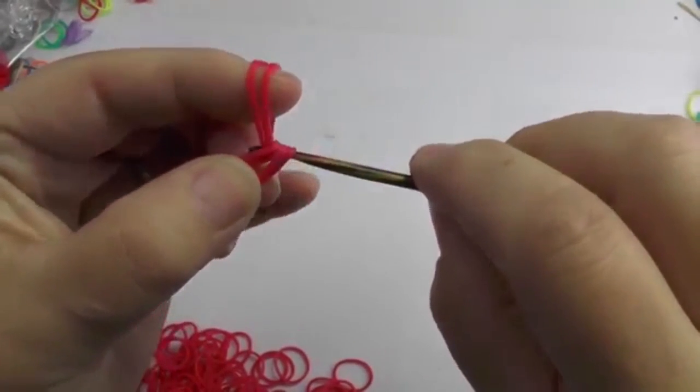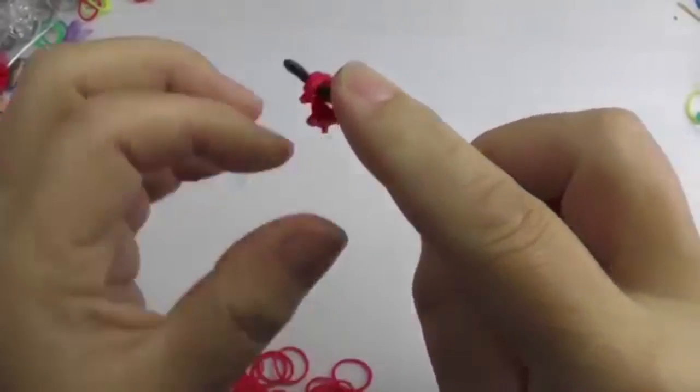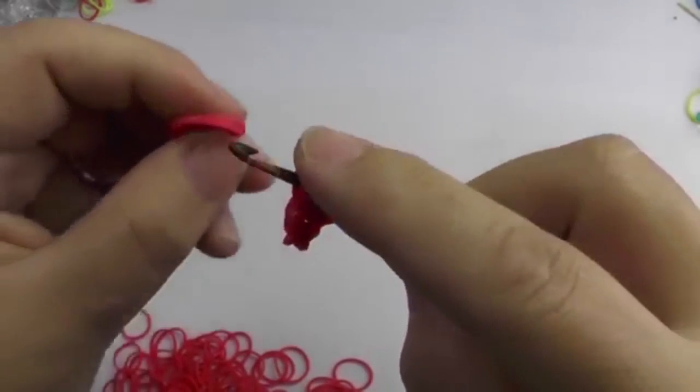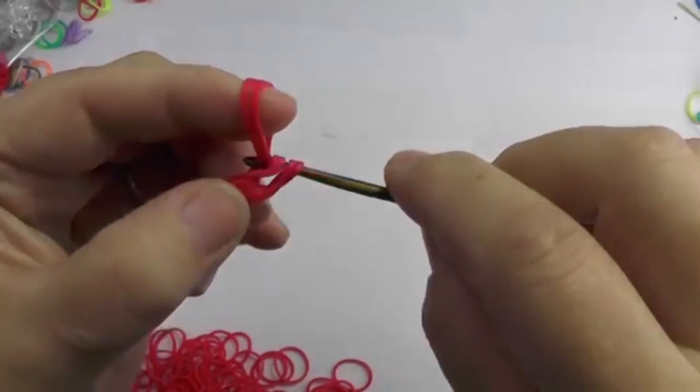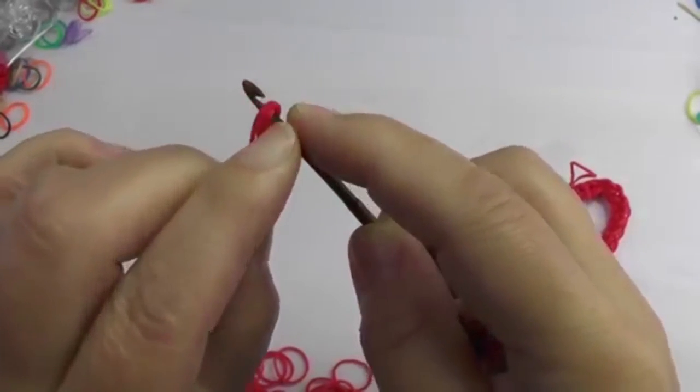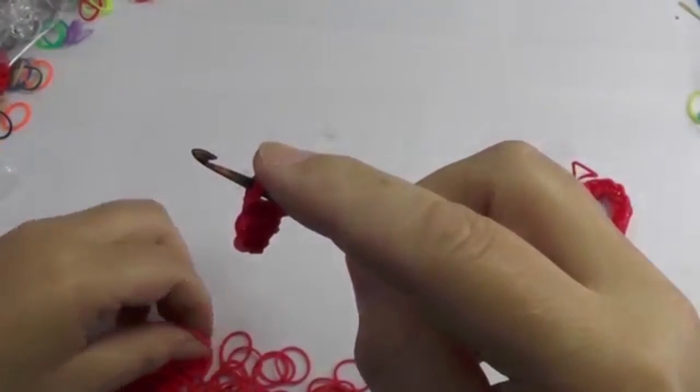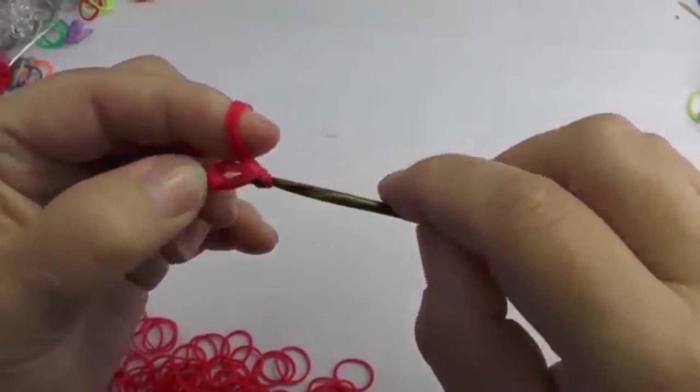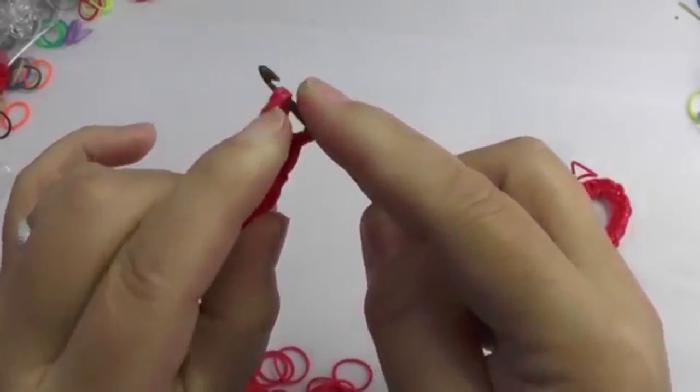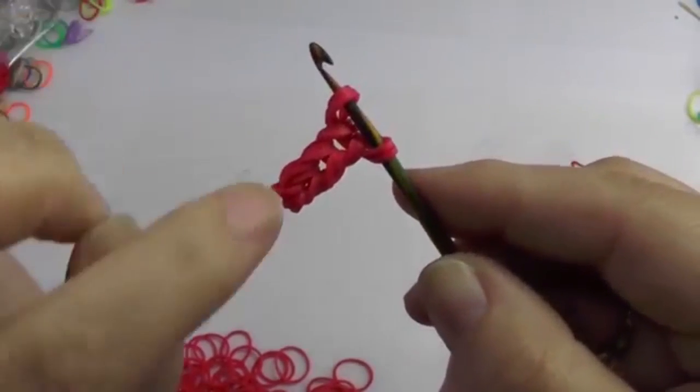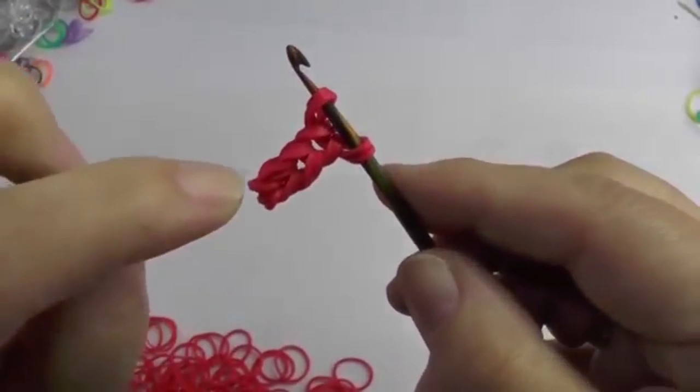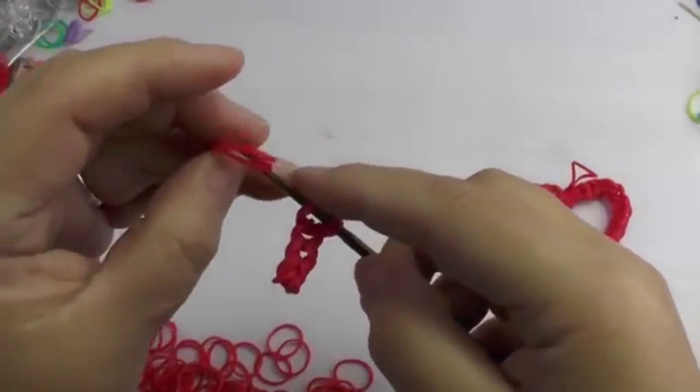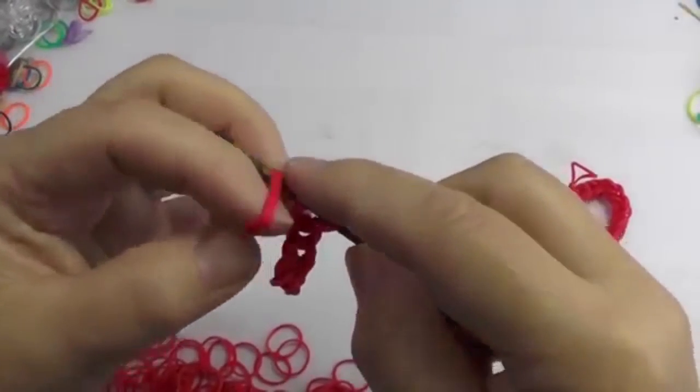So this was the first step. Now again we need two bands and we're gonna do the same. We will keep going in the same manner. We need 13 pairs total. Start here then one, two, three, and four.